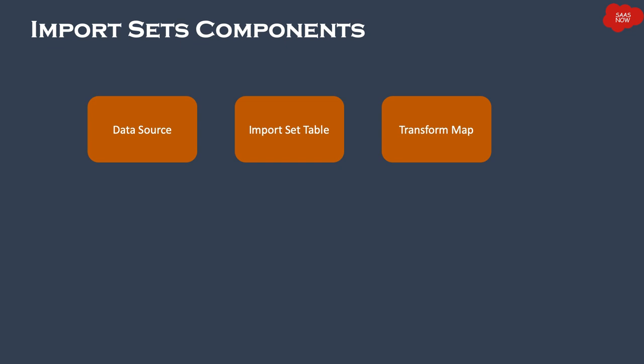For example, you might have an Excel sheet with an incident table where column names differ — maybe 'numbering' instead of 'number', or 'assignment' instead of 'assigned to'. It is not mandatory that the external source has the same field names. The transform map is where you map those differing fields so the data goes into the correct columns in the ServiceNow incident table.